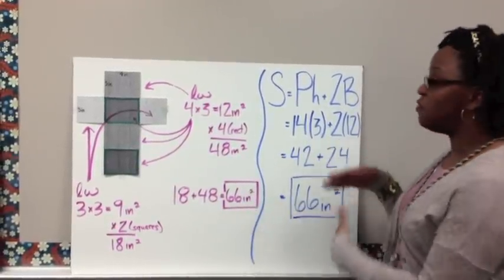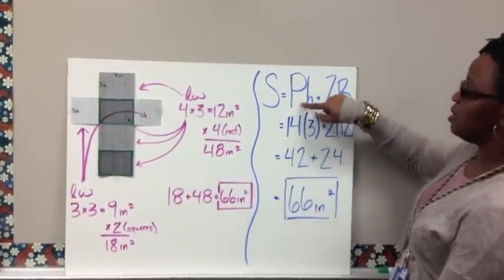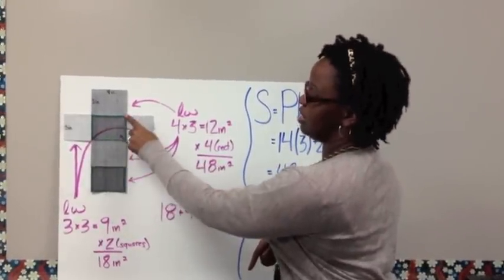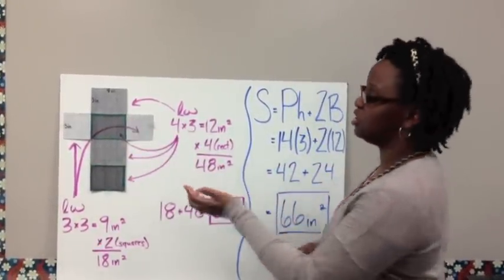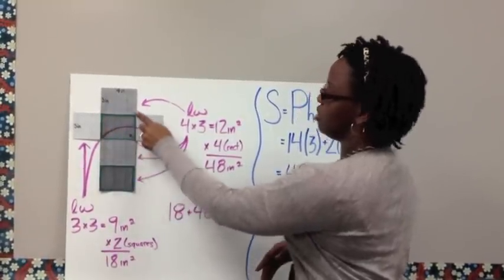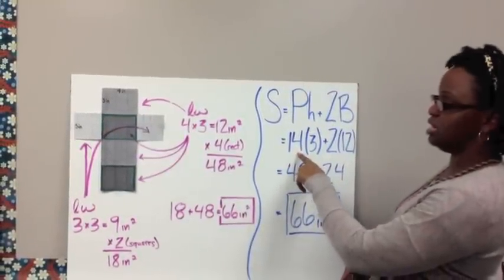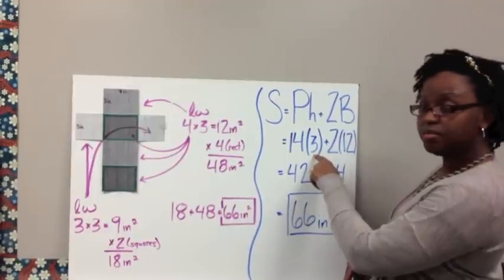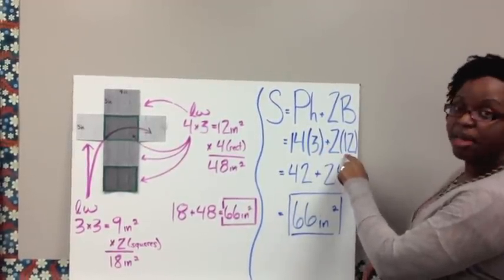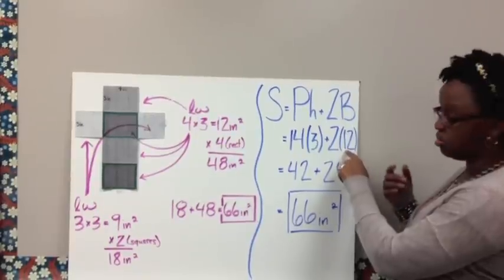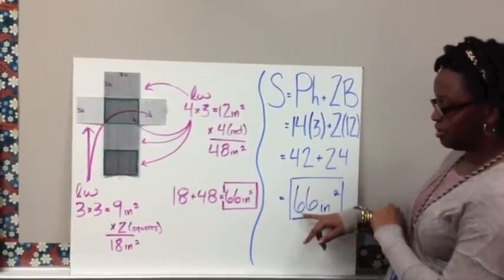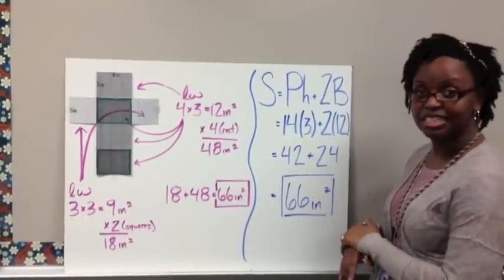If you chose to use the formula instead: the perimeter of the base — using the green base on the bottom — 4 plus 3 plus 4 plus 3 gives a distance around of 14, times the height of the prism, 3. Adding 2 times the area of the base, which was 4 times 3 or 12. Simplifying: 42 plus 24 gives us the same surface area of 66 inches squared.